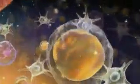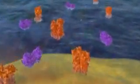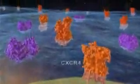SDF1 interacts with the chemokine receptor called CXCR4, which is located on the surface of stem cells, bone marrow endothelial cells, and other stromal cells.